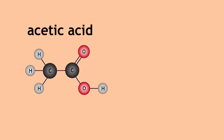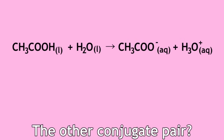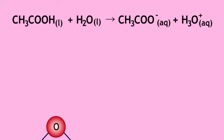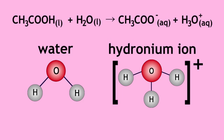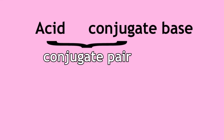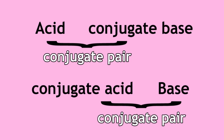Acetic acid and the acetate ion form a conjugate pair. Water and the hydronium ion is the other conjugate pair. So an acid and its conjugate base is a conjugate pair, and a base and its conjugate acid is also a conjugate pair.